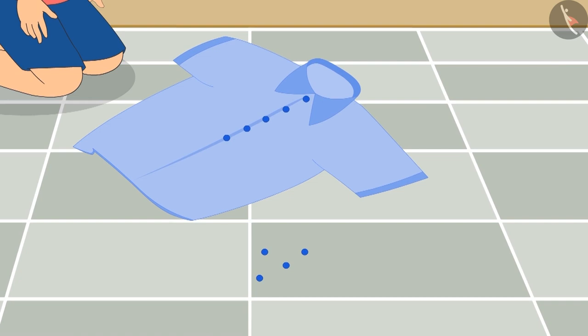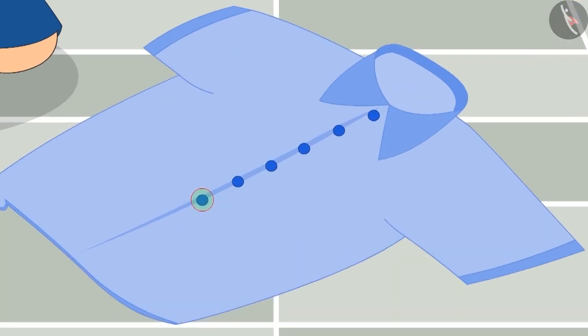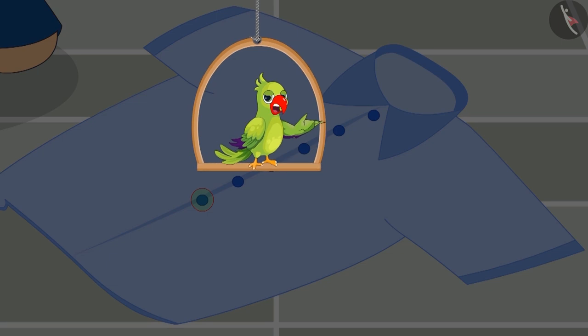Through hard work, Chotu stitched one more button after five buttons. Now think and answer, total how many buttons are stitched on Chotu's shirt?